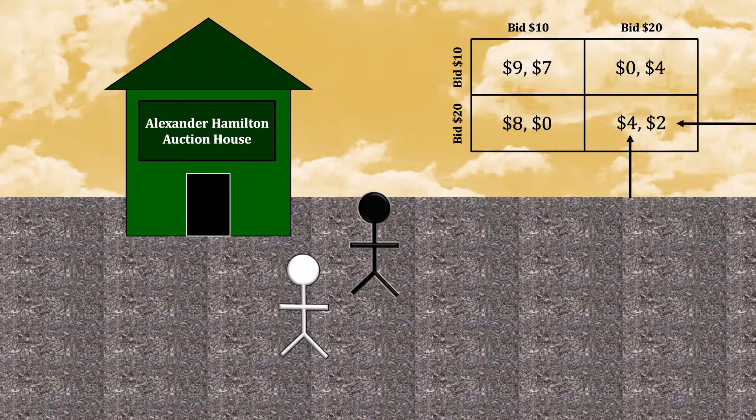This is also self-reinforcing. You bidding $20 makes your opponent want to bid $20, which makes you want to bid $20, which makes them want to bid $20, and so forth.